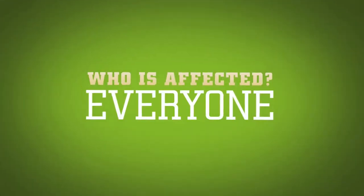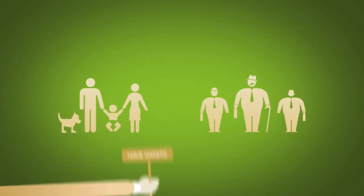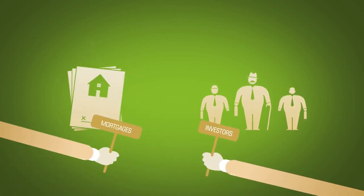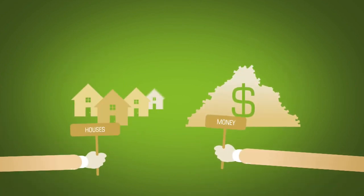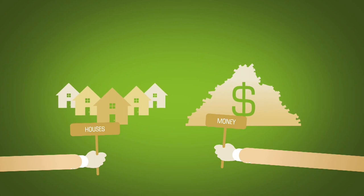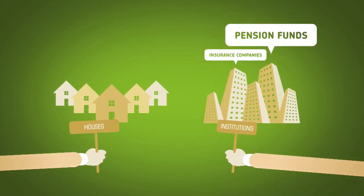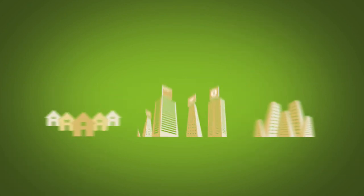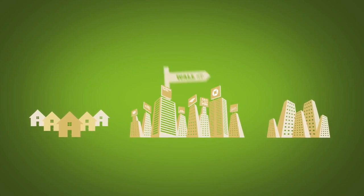Who's affected? Everyone. How did it happen? The credit crisis brings two groups of people together: homeowners and investors. Homeowners represent their mortgages, and investors represent their money — large institutions like pension funds, insurance companies, sovereign funds, mutual funds, etc. These groups are brought together through the financial system, a bunch of banks and brokers commonly known as Wall Street.